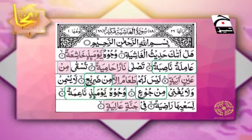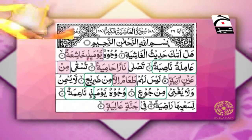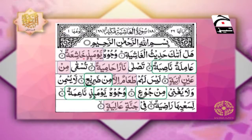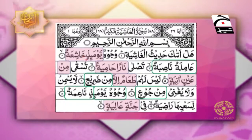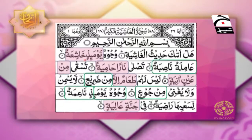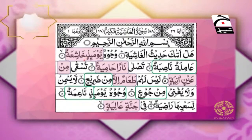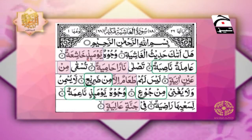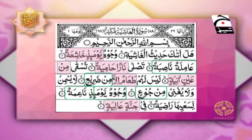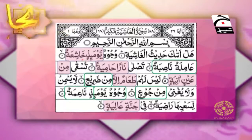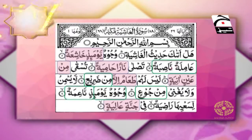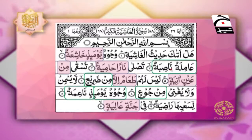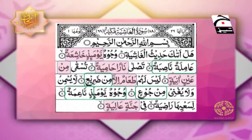وُجُوهٌ يَوْمَئِذٍ خَاشِعَةٌ — یہاں کسرہ تنوین کے بعد خا آیا ہے۔ خا حروف حلقی میں سے ہے تو ہم کیا کریں گے؟ اظہار کریں گے، تنوین کے نون کو بالکل صاف پڑھیں گے بغیر غنہ کے۔ آگے دیکھیں — یہاں بھی تنوین ہے اور اس کے بعد نون ہے، نون یرملون میں سے ہے، تو یہاں اظہار نہیں ہوگا، ادغام ہوگا۔